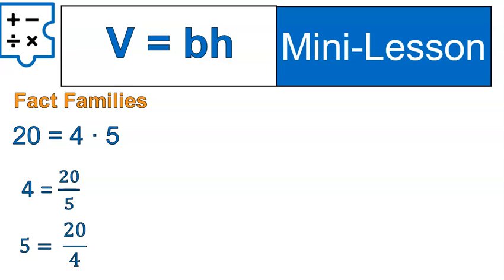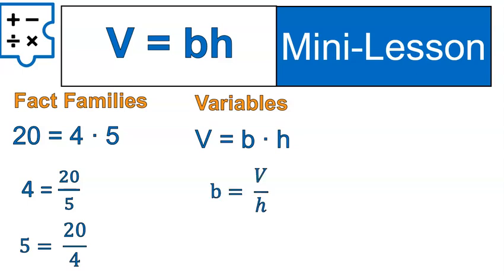We can do the same thing with variables. If the volume is the base times the height, I can calculate the area of the base by taking the volume divided by the height. I can also find the height if I take the volume divided by the area of the base. It's the same situation as the fact families. If you're ever given two of those, you can calculate the other one using one of these formulas.